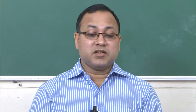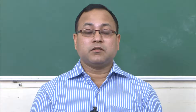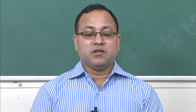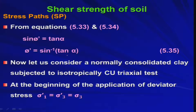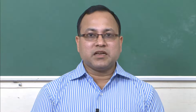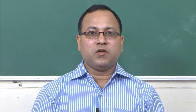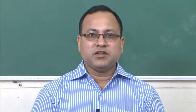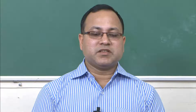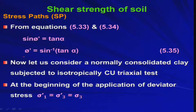Welcome back. In the last lecture, we discussed the stress path for the CD test — isotropically consolidated CD test — where the stress path makes an angle of 45 degrees with the horizontal. We established a new kind of failure envelope known as the KF line, and derived the relation for the inclination between the KF line and the original failure envelope.